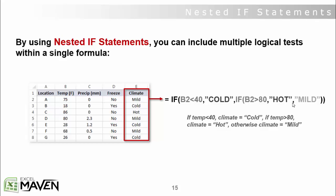If you have a temperature between 40 and 80, like 55, for instance, both of these are going to evaluate false. And your cell is going to return the value if false value of mild.